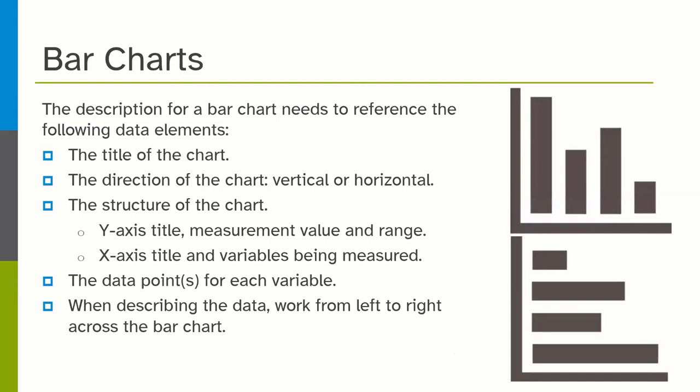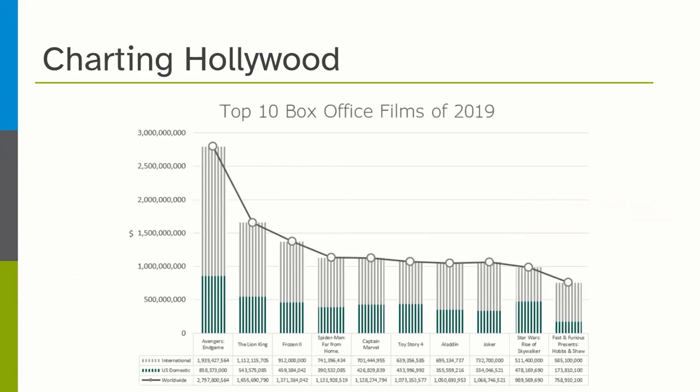For bar charts, the description needs to reference: the title of the chart, which is generally your first sentence; the direction — whether it's horizontal or vertical, which often gets forgotten; the structure of the chart including the Y-axis and X-axis, the measurement values and range, and the variables being measured; and each data point. When describing the data, work from left to right. For a horizontal chart, you can go bottom to top or top to bottom — just let the user know which way you're going.